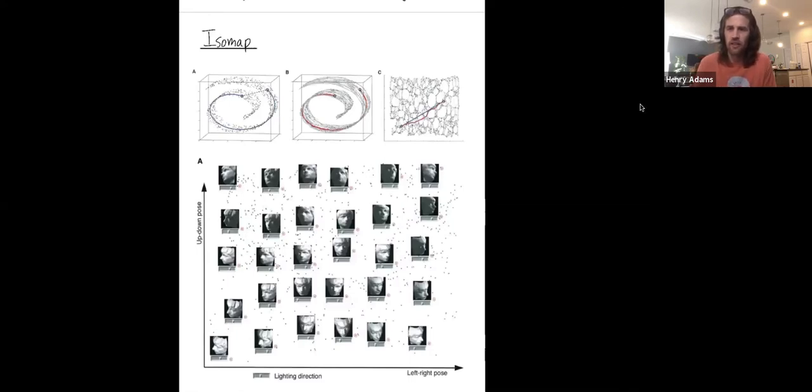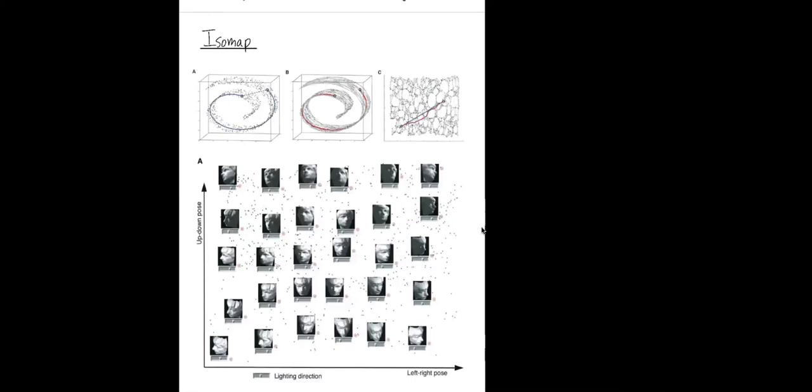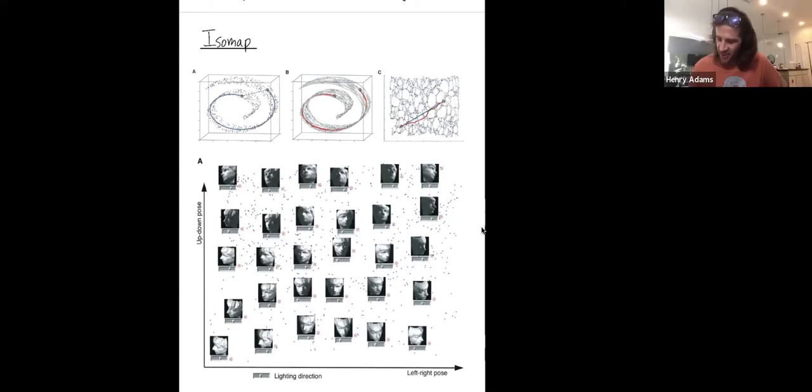And when we map down into two dimensional space, this is the particular picture that we get. One comment is that this dataset doesn't look like a Swiss roll necessarily, but it looks like some high dimensional surface in an even higher dimensional space. And so we're sort of unrolling this dataset to produce a 2D planar map.